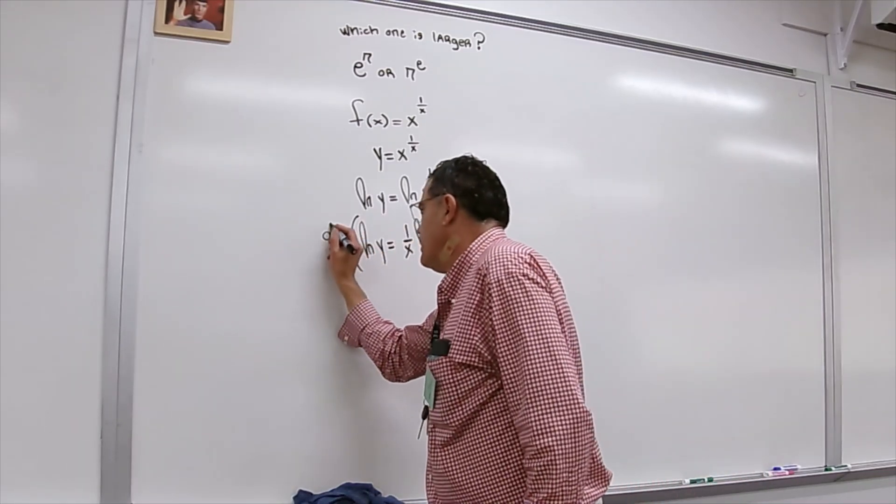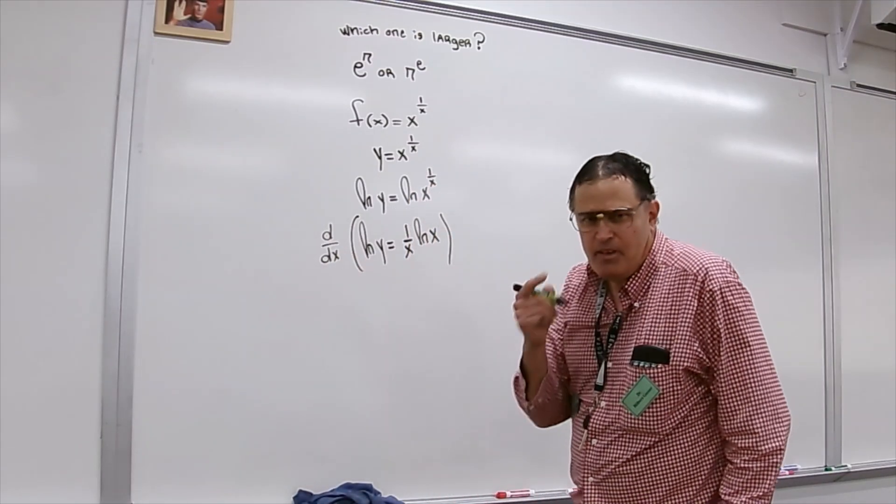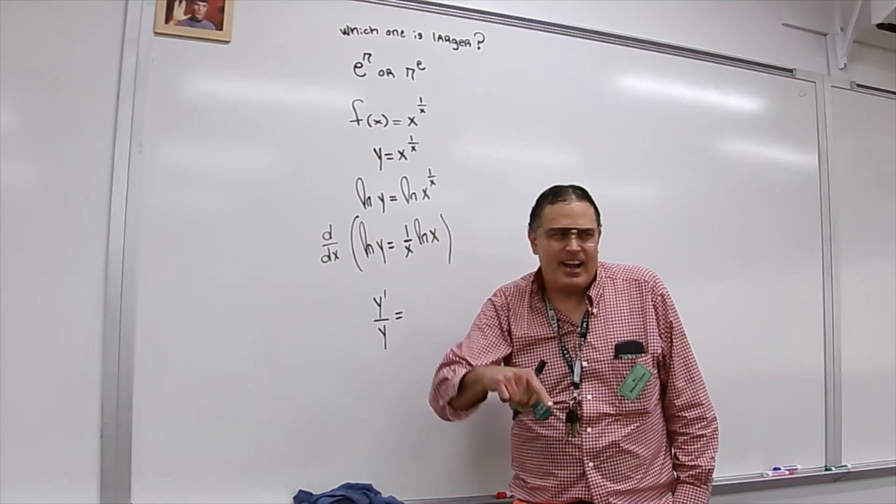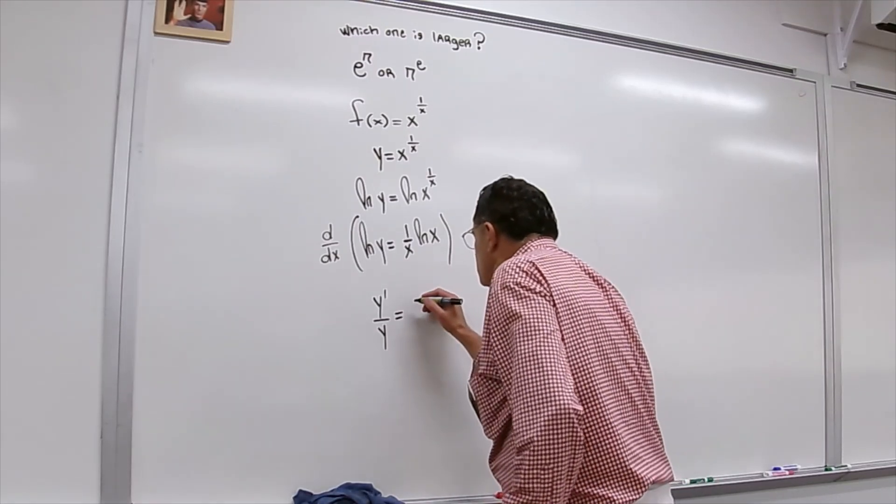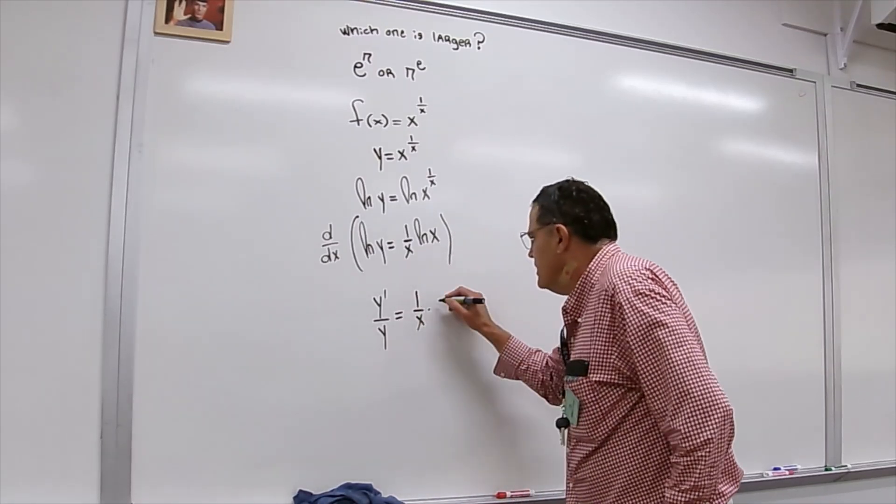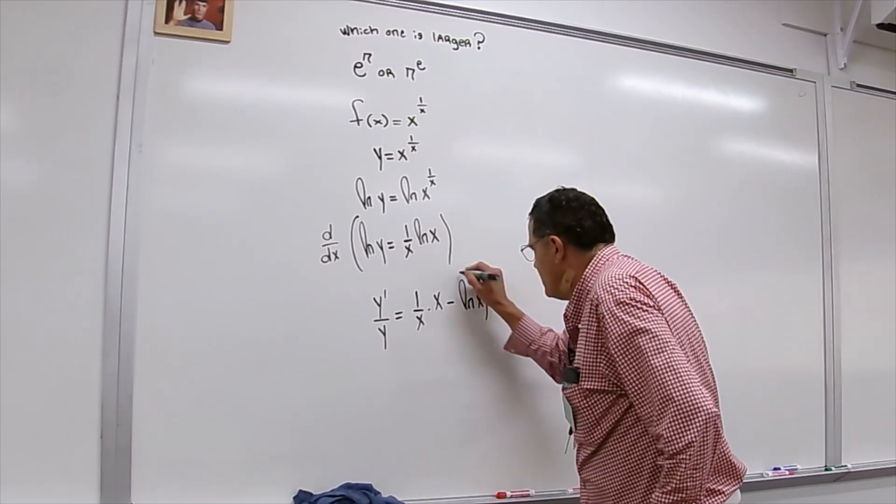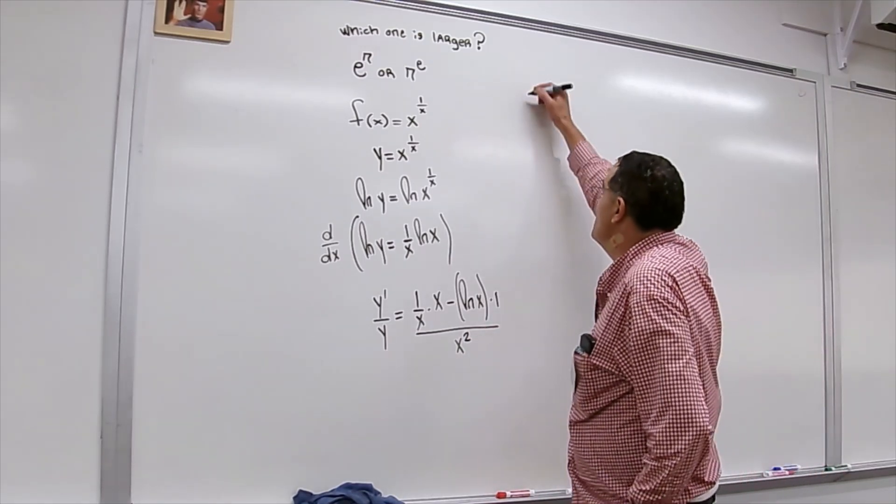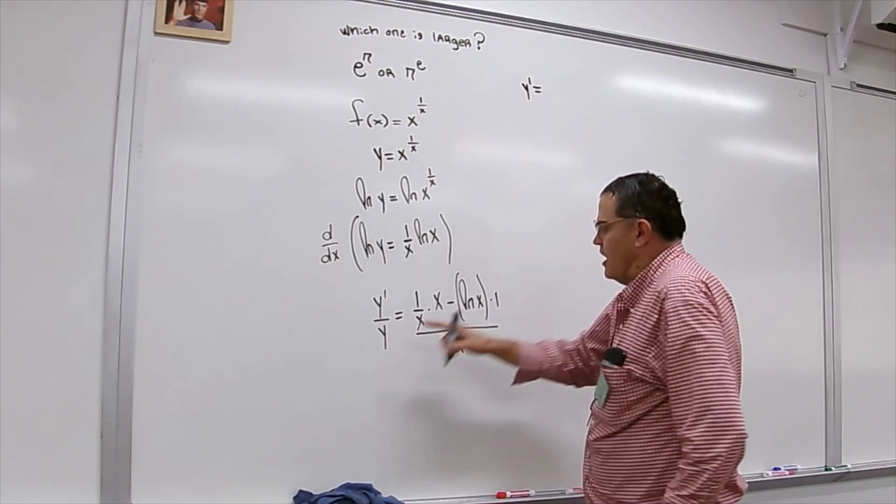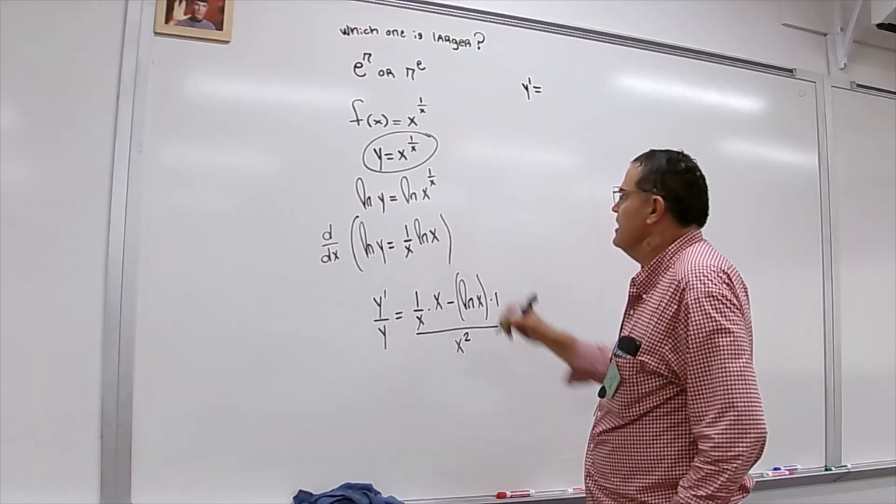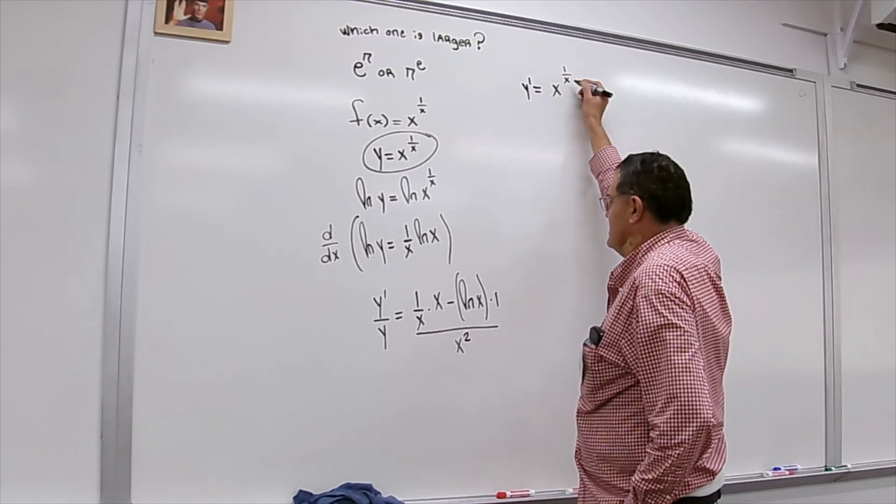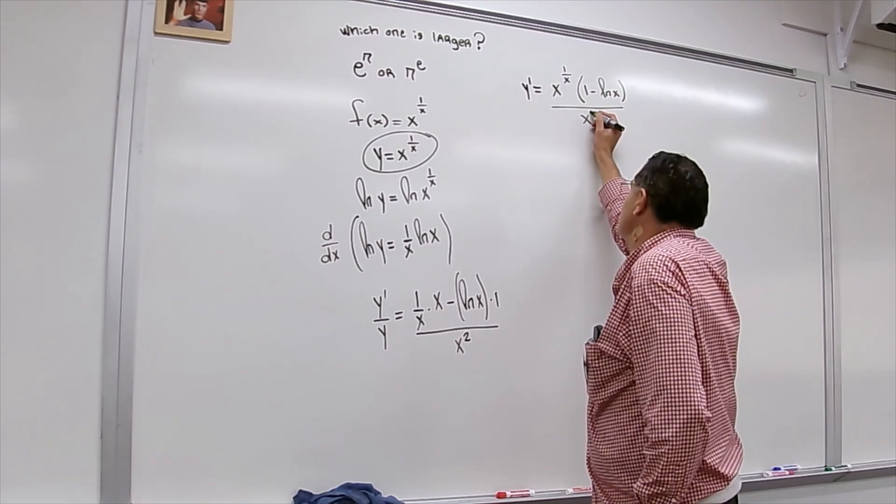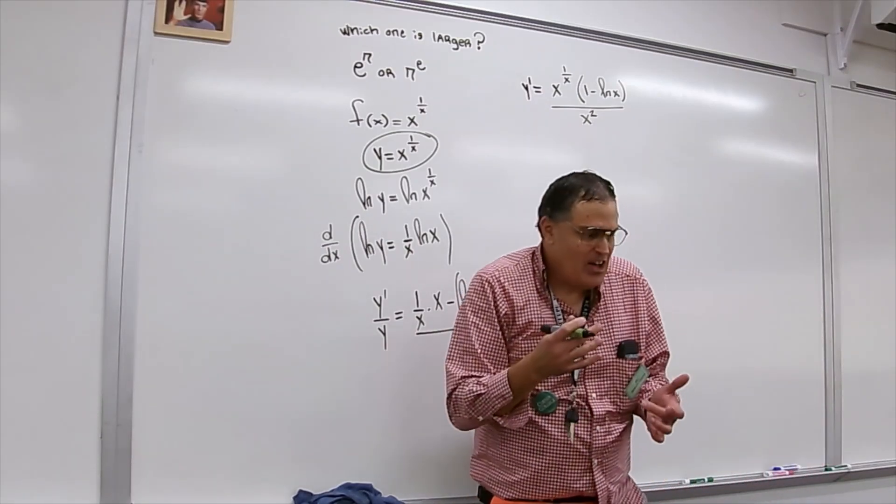I'm going to take the derivative of both sides. The derivative of ln y with respect to x is y prime over y. The derivative of ln x over x is the quotient rule. So the quotient rule says the derivative of the top times the bottom minus the top times the derivative of the bottom all over the bottom squared. So you end up getting y prime equals I'm going to multiply both sides by y and y is really x to the 1 over x. x to the 1 over x times 1 minus ln x all over x squared. And that is remarkable.